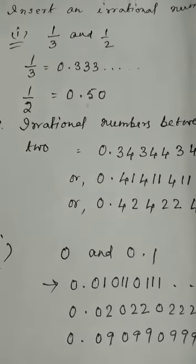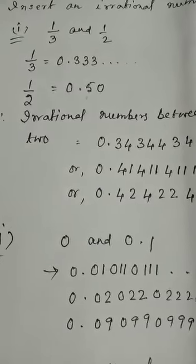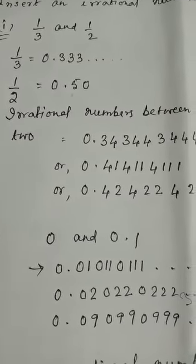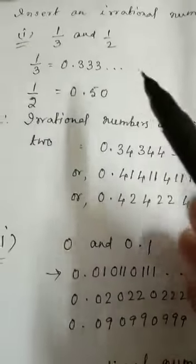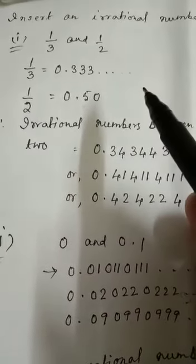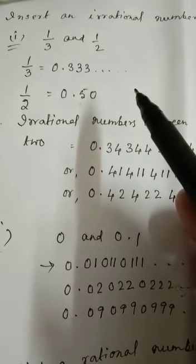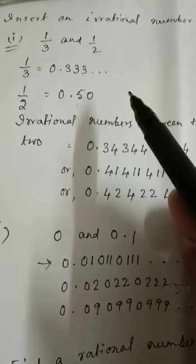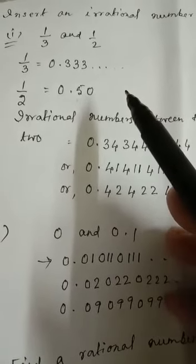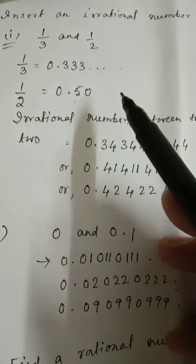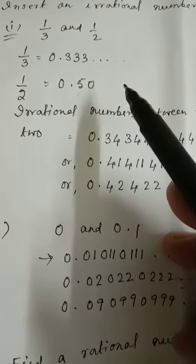Now I am going to show you how you can insert an irrational number between two given numbers. The decimal expansion of every irrational number is non-terminating, non-recurring decimals. And conversely, any number with non-terminating, non-recurring decimal expansion is an irrational number.